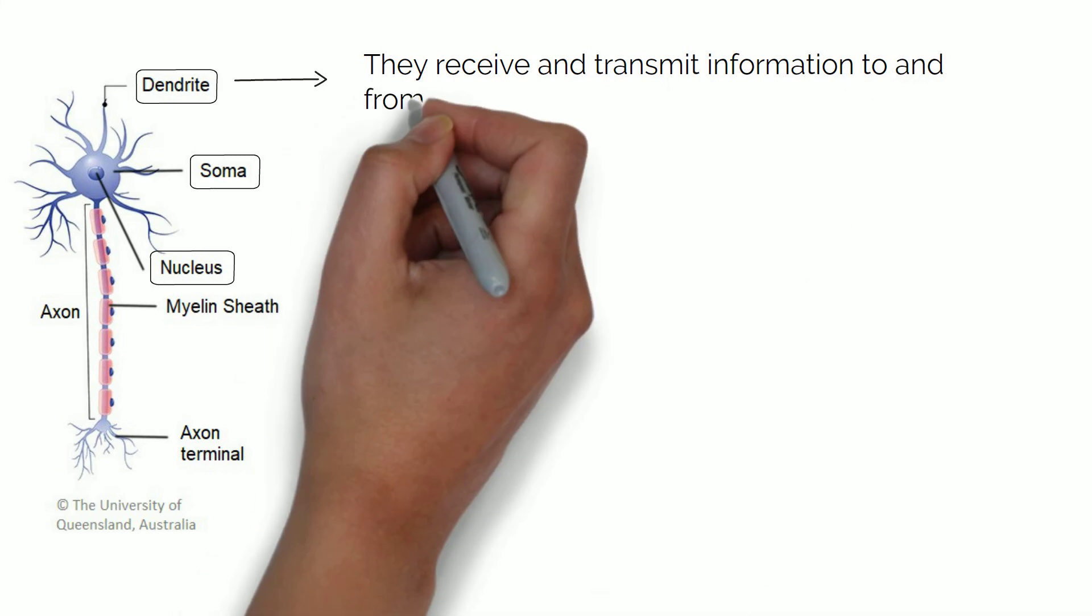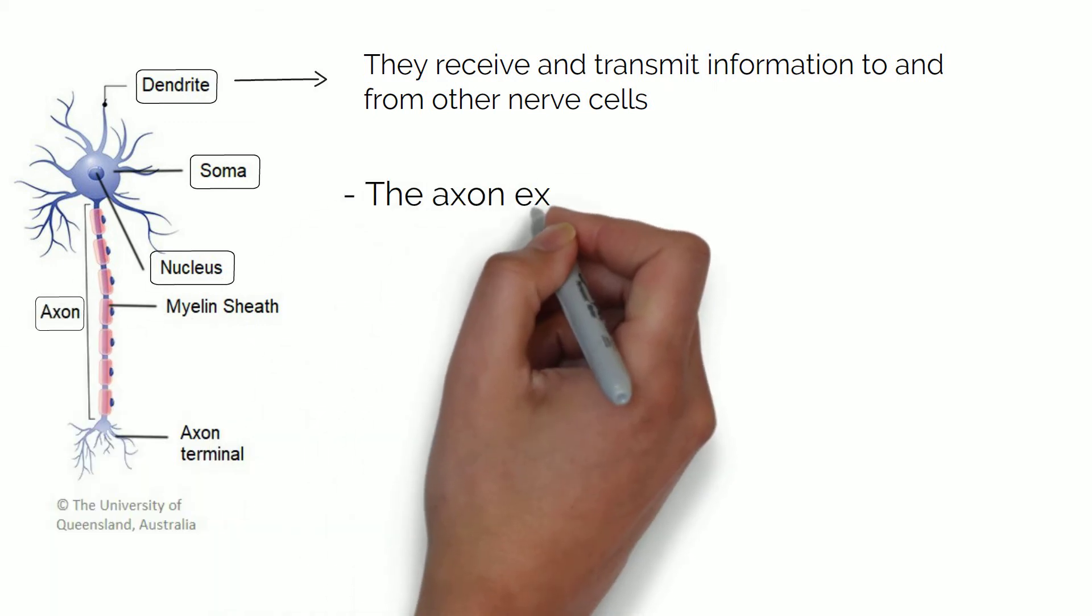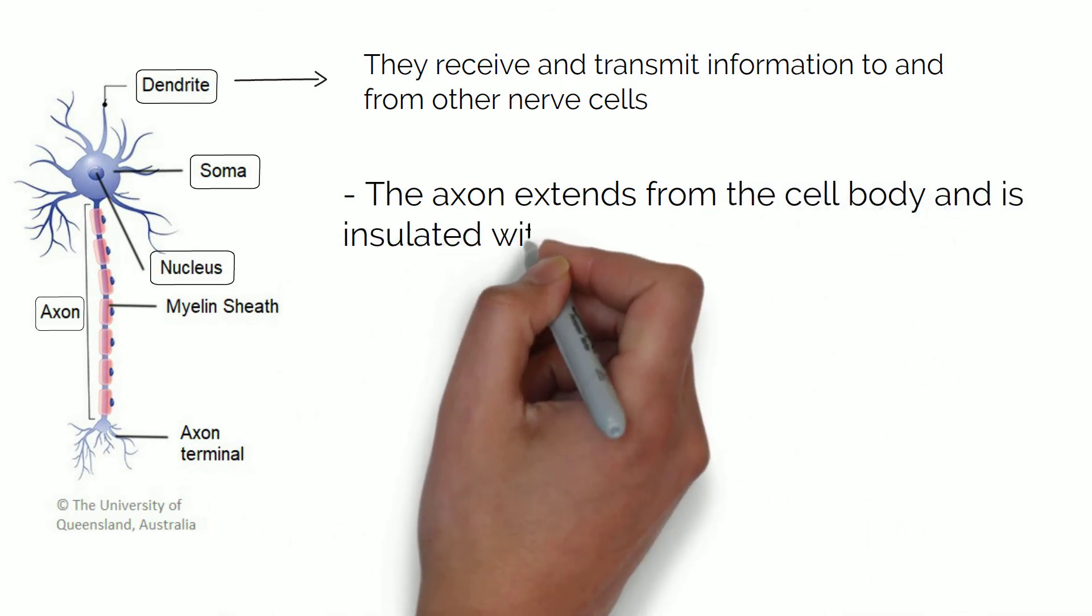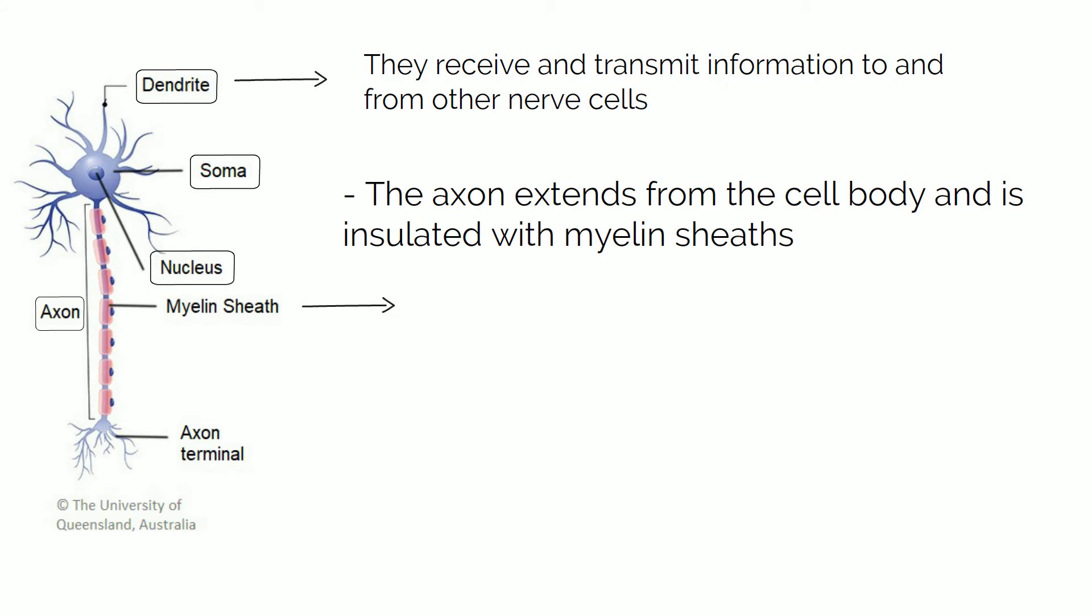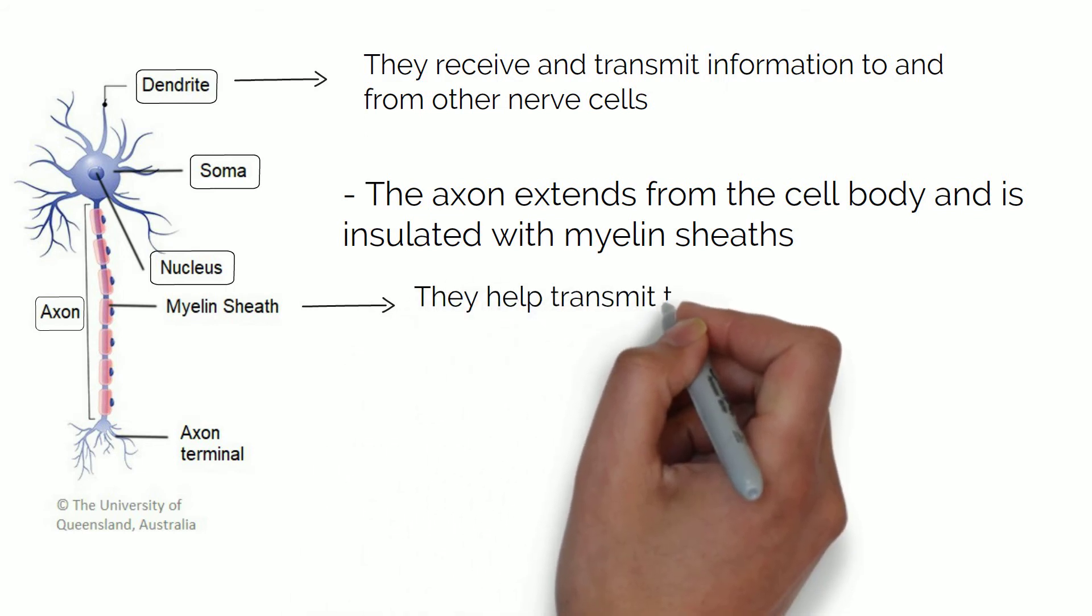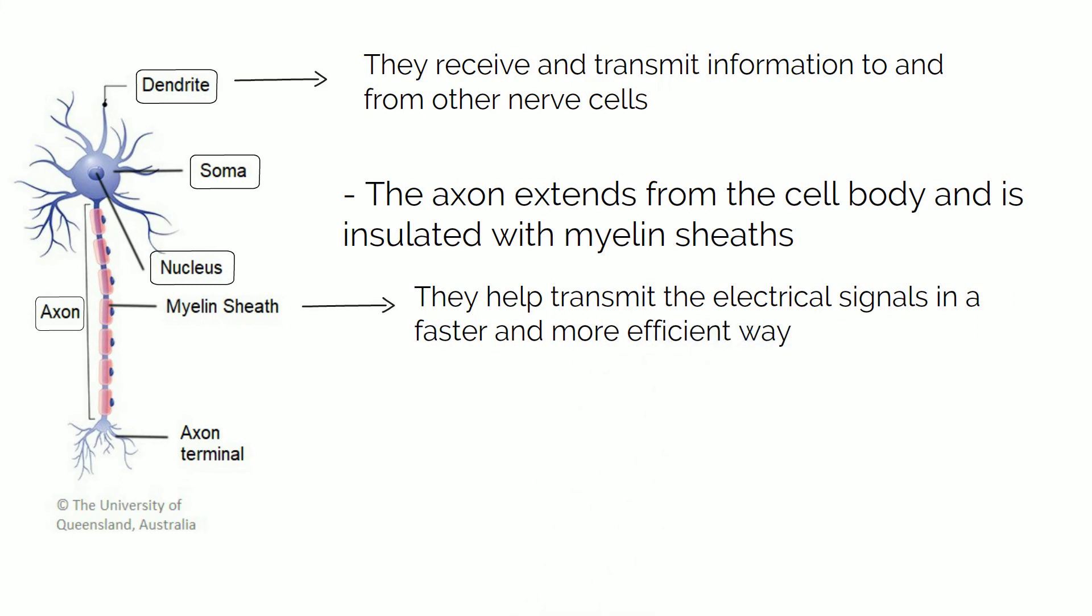Then you have a main branch, so to say, called an axon which extends from the cell body. The axons are insulated with myelin sheaths, and the purpose of these structures is to help transmit the electrical signals in a faster and more efficient way. At the end of the axon there's the axon terminal.